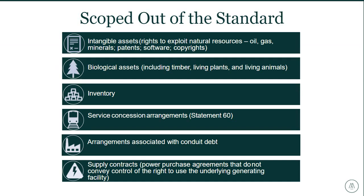Several items are scoped out of the standard. It doesn't apply to leases of intangible assets, including rights to explore for or exploit natural resources like gas, oil, and minerals, licensing contracts for items such as copyrights and computer software. Also scoped out are biological assets, inventory, service concession arrangements, arrangements associated with conduit debt, and supply contracts like power purchase agreements.